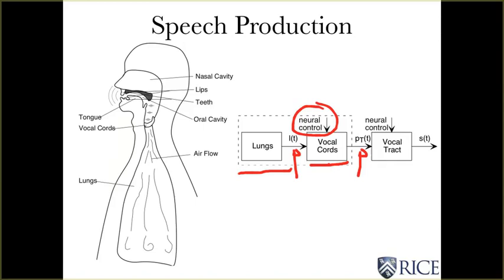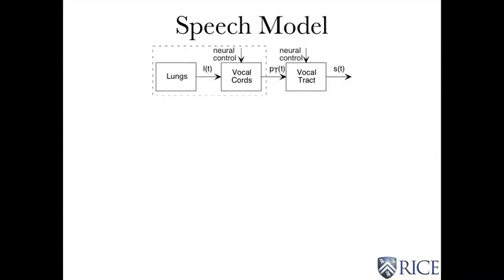That serves as the input to the vocal tract, which, according to what you want to say, the position of the tongue, the lips, everything else is again under neural control, and that determines what is being said. The result is the speech signal that you pick up with a microphone. Let's examine this in more detail to figure out important characteristics of these signals.